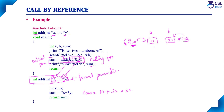Here, the formal parameter and actual parameter share the same memory location — no different memory is created for formal parameter, so memory is not wasted. Whatever changes we are doing in formal parameter will definitely reflect in actual parameter, since both parameters have the same memory location. Unlike called by value, we cannot retain the original data — that is the actual parameter value. This is the concept of called by reference technique.